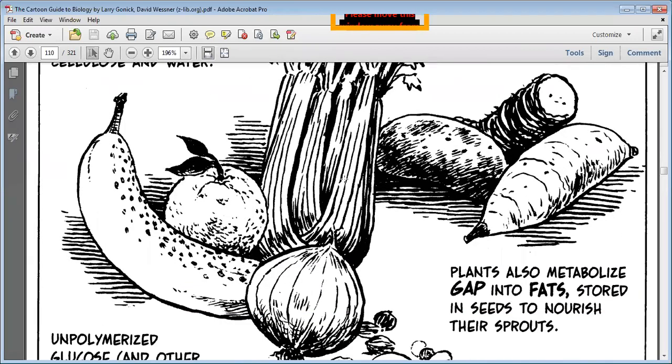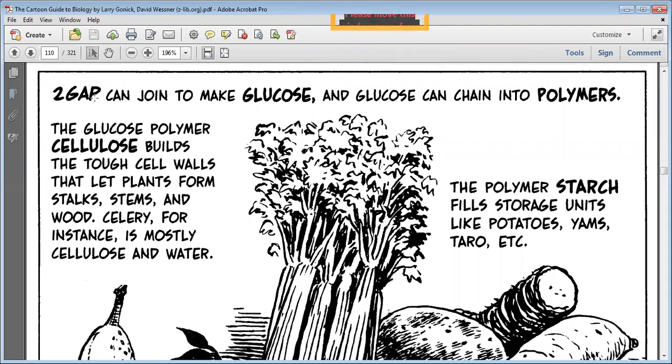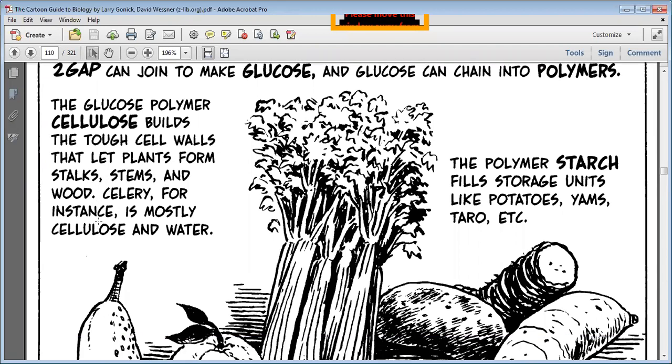This is all fruits which we are getting from plants. Two GAP, two glyceraldehyde phosphate can join to make glucose, and glucose can chain into polymers. The glucose polymer cellulose builds the tough cell walls that let plants form stalks, stems, and wood. So the plant cell wall is helping the plant to improve. Celery, for instance, is mostly cellulose and water.